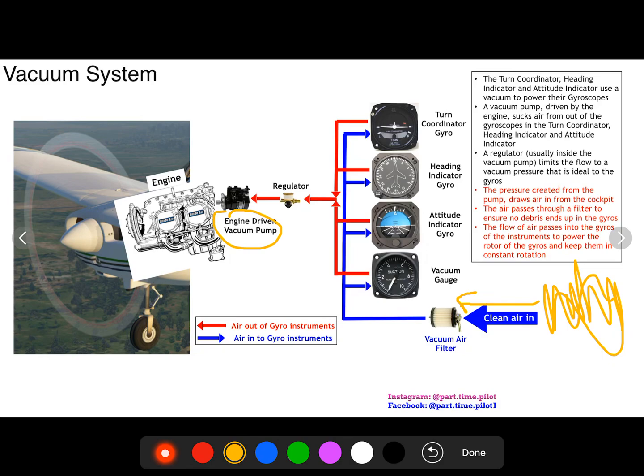And again we're gonna filter out the air even though we got clean air from the cockpit. We want extra clean air for our gyros. Any small amount of debris could get in there and jam up one of your gyros. You do not want anything in there. So again we're gonna get clean air from the cockpit and then we're gonna filter that clean air to make sure it's extra clean.